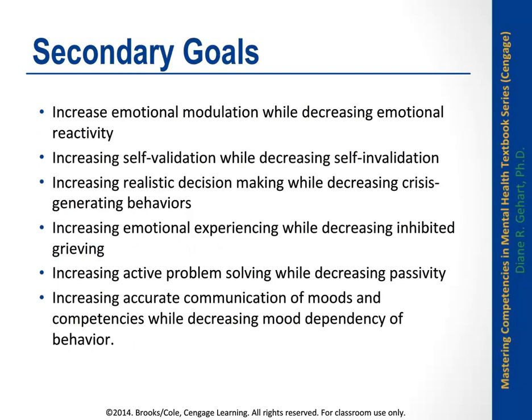There are also secondary goals closely related to the basic coping skills: increasing emotional modulation while decreasing reactivity; increasing self-validation while decreasing self-invalidation; increasing realistic decision-making while decreasing crisis behaviors; increasing emotional experiencing while decreasing inhibited grieving; increasing active problem-solving while decreasing passivity; and increasing accurate communication of moods and competencies while decreasing mood dependency of behavior. These are closely related to many of the specific skills taught in DBT.